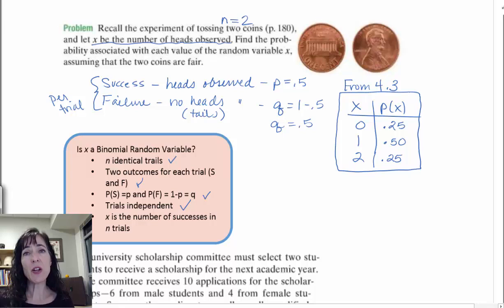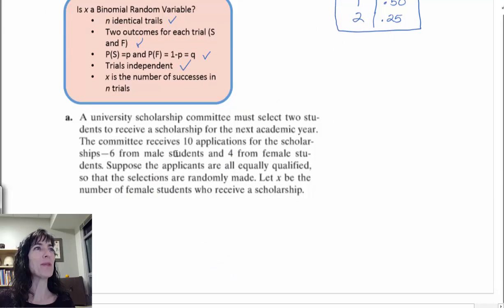And X is the number of heads observed in two trials. So this is saying that our N is two. So we're talking about two trials there. And so what we're saying here is if you do an experiment where you toss two coins, that your N is two, and that these are binomial random variables, because X is a binomial random variable, because we can meet all these criteria for a binomial random variable.